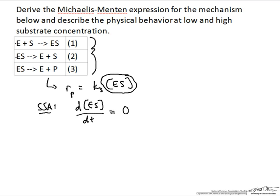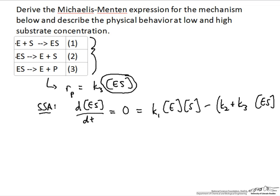So that derivative is equal to zero, and we can write all the reactions that eliminate and that produce enzyme-substrate complex. The net rate of production minus consumption should be equal to zero. The enzyme-substrate complex is produced in reaction 1 and consumed in reactions 2 and 3. So we write this out: it's produced in reaction 1 as K1 times [E] times [S], consumed in step 2 with a rate constant times [ES], and then also K3 times [ES].